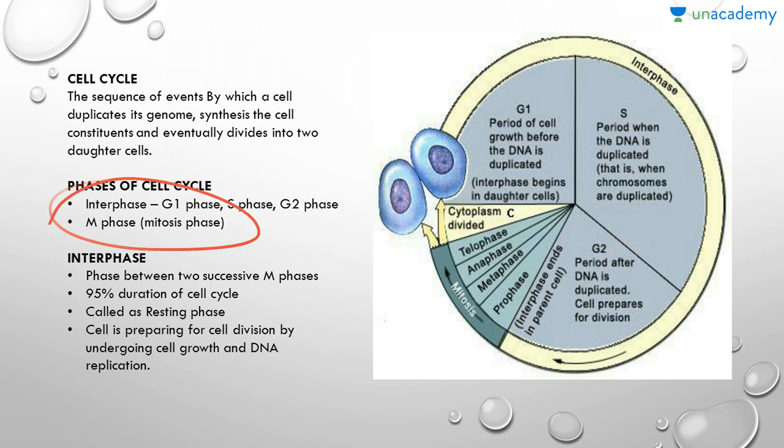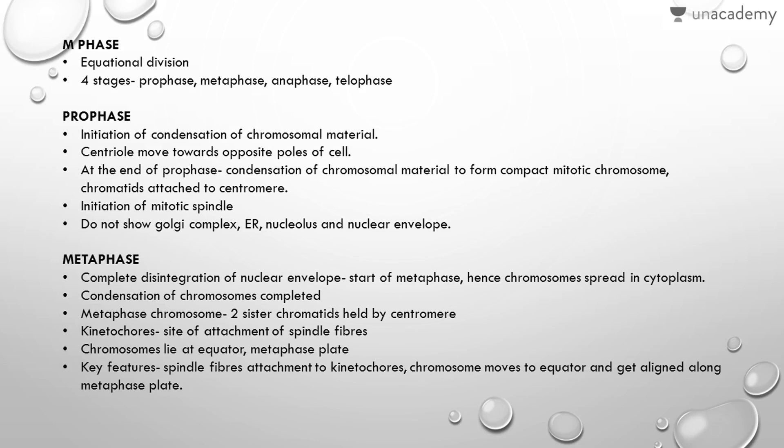The M phase is also called the mitosis phase, or equational division, because the number of chromosomes in the parent and the progeny will be the same — both parent and daughter cells receive the same amount of chromosomes. The M phase is further divided into four stages: prophase, metaphase, anaphase, and telophase.